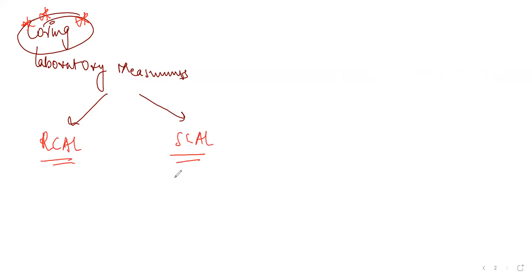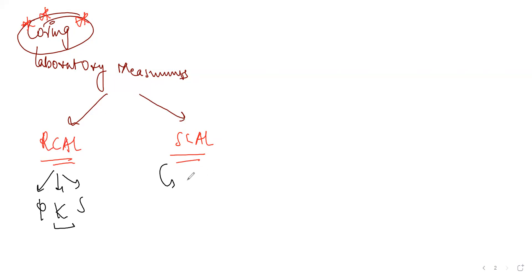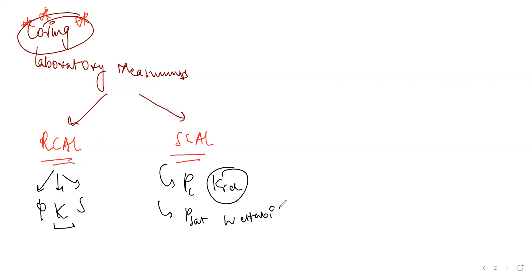The two classes of laboratory measurements are Routine Core Analysis (RCAL) and Special Core Analysis (SCAL). Routine core analysis covers the simpler properties: porosity, absolute permeability, and saturation. Absolute permeability is measured when the rock is totally saturated by a single fluid. Special core analysis covers more complex properties like overburden pressure, capillary pressure, relative permeability, and interfacial tension.